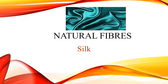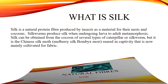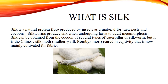Natural Fibers: Silk. What is silk? Silk is a natural protein fiber produced by insects as a material for their nests and cocoons. Silkworms produce silk when undergoing larvae to adult metamorphosis.